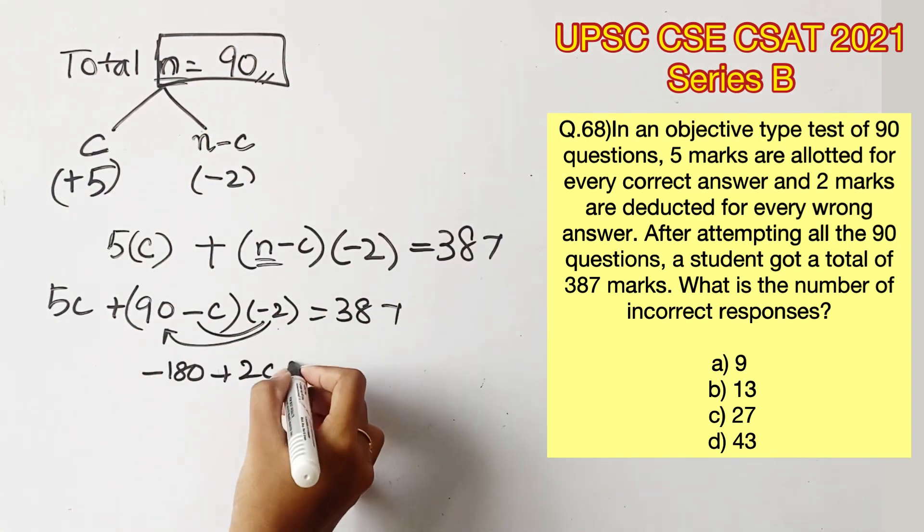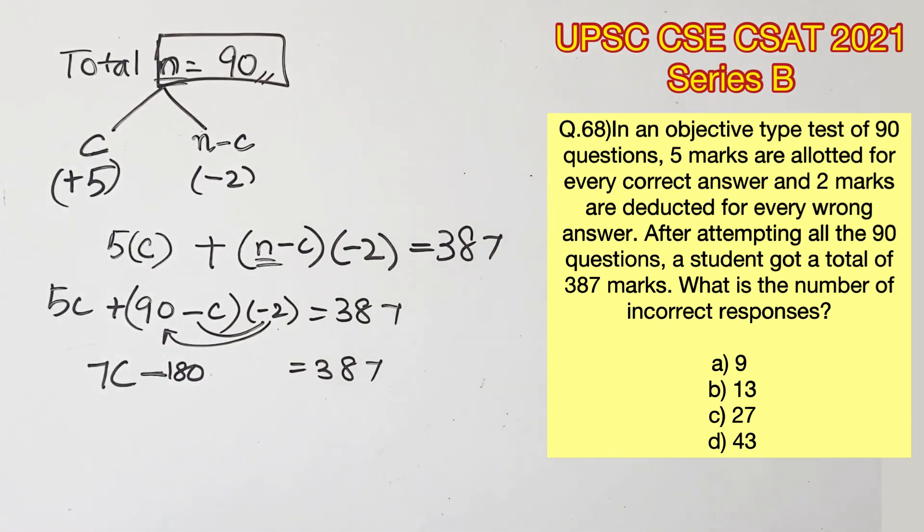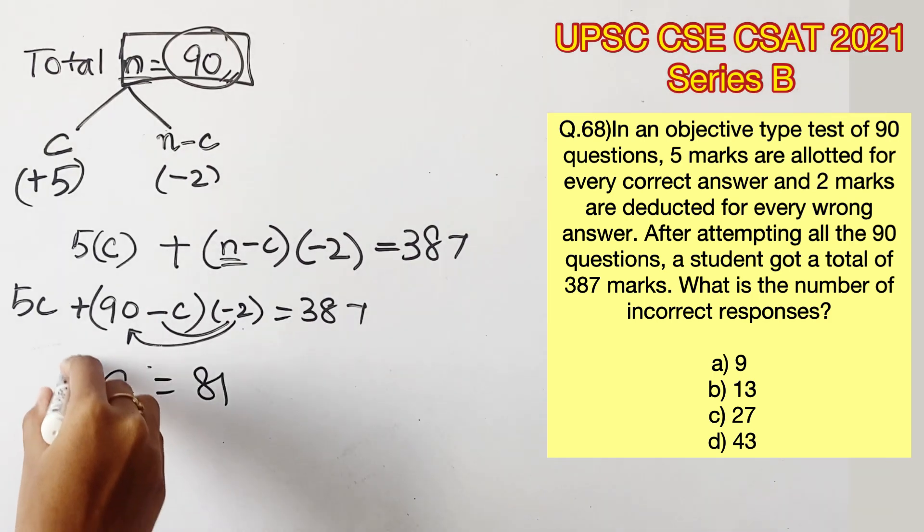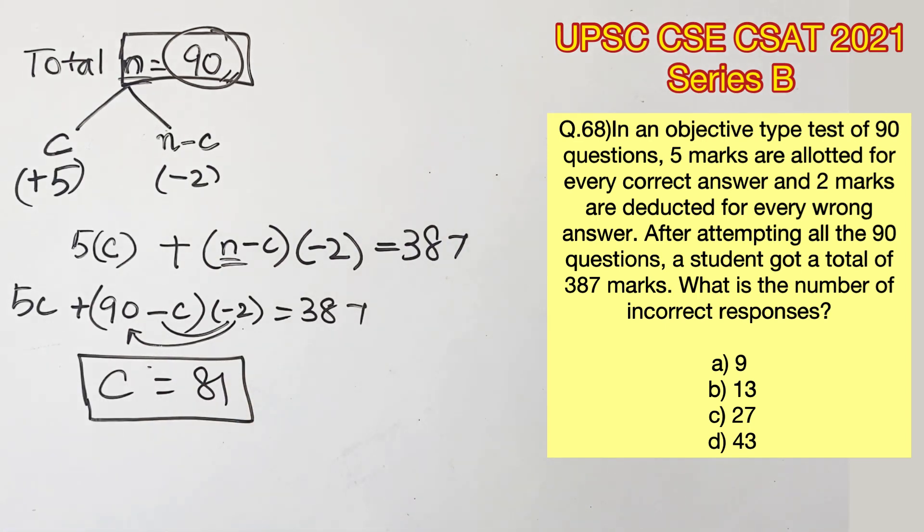Solving this, we will get 5c minus 180 plus 2c equals 387, 7c equals 387 plus 180, 7c equals 567. Now c will be 81, which is the number of correct responses.